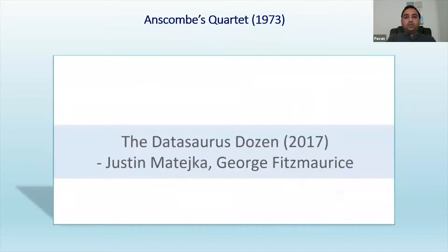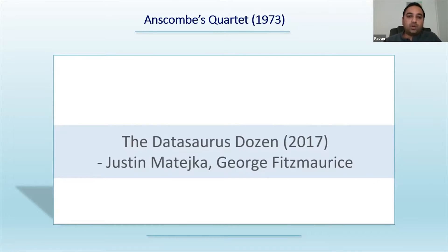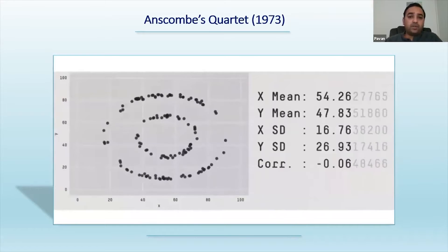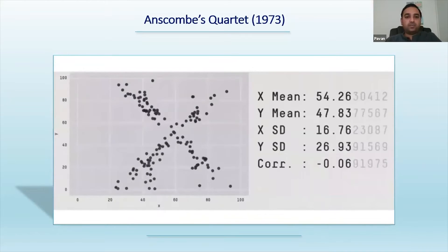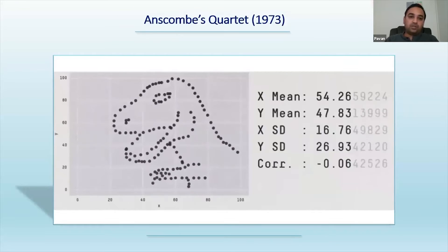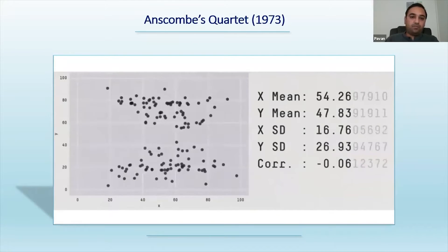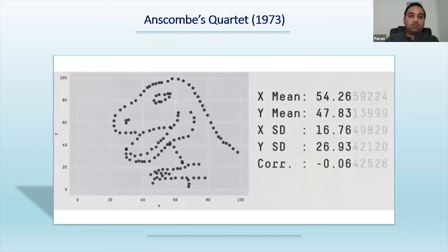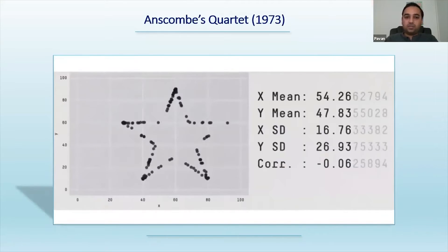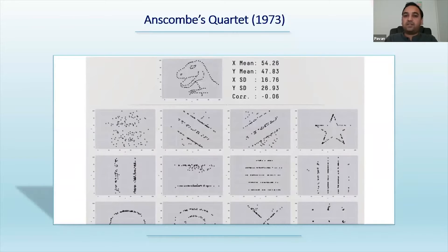Taking it to the next layer — two statisticians, Justin and George, wrote a Python code using the same X, Y, and standard deviation factors and drew different graphs from it. Every chart shown has the same X mean, Y mean, standard deviation, and correlation values. But if you see these visuals, you can easily say: this is a dinosaur image, this is a star, this is a circle — different graphs, and they all tell you a different story. Statisticians alone will not be able to tell you the story; you definitely need data visualization on top of it. That's the power of data visualization.